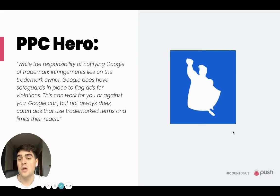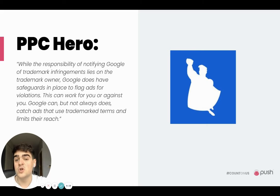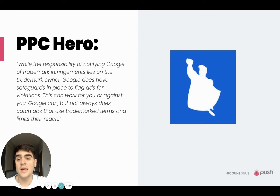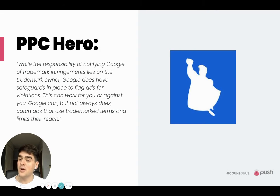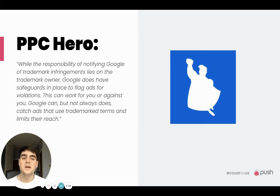PPC Hero covers this really well in a recent blog. While the responsibility of notifying Google of trademark infringement lies on the trademark owner, Google does have safeguards in place to flag ads for violations — and this can work for you or against you. Google can, but not always does, catch ads that use trademark terms and limit their reach. In my specific case, my client was using their own trademark name but was being flagged as a trademark violation and had to get this whitelisted against their name to allow the ad to run using their own brand name. This stresses the importance of staying on top of this and correcting any mistaken policy decisions as soon as possible.